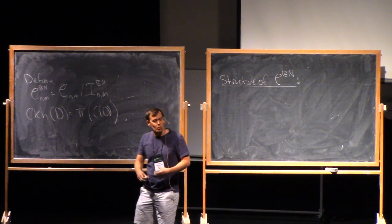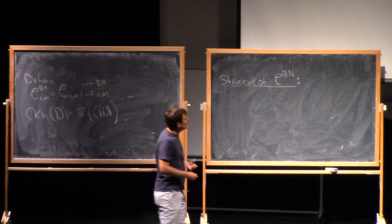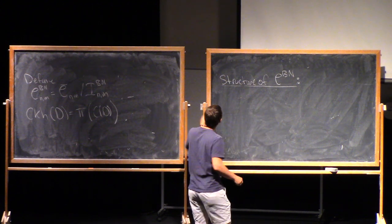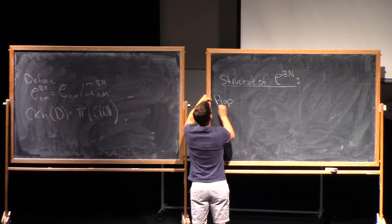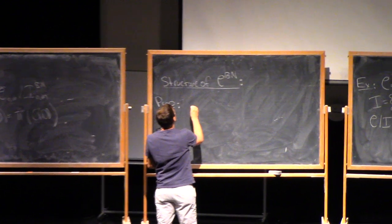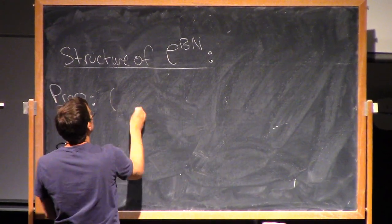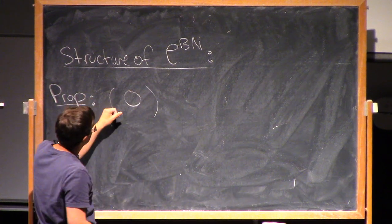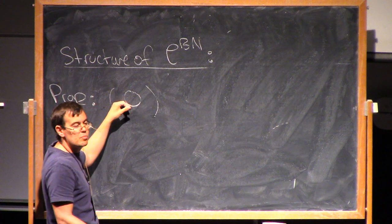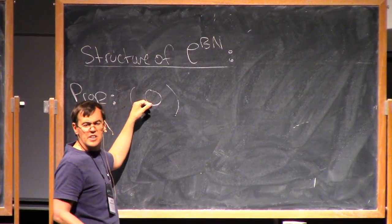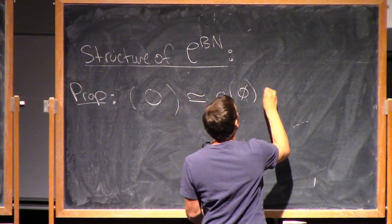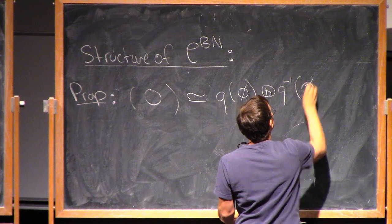Now we're going to study the structure of this category C_BN. The structure of C-bar is really kind of woolly — it's got lots and lots of objects. Instead, what we'll see in this category is that basically everything can be expressed in terms of finitely many objects. The key point is the following proposition: if I have a planar diagram just with a circle in it, it's isomorphic to Q times the object where I erase the circle, plus Q-inverse times the object where I erase the circle.